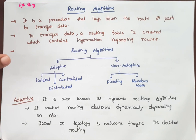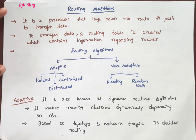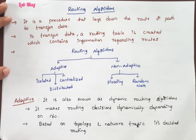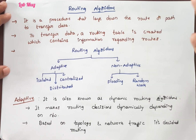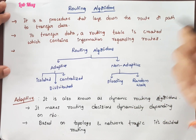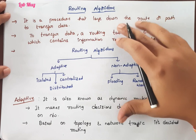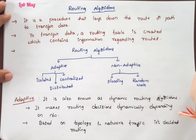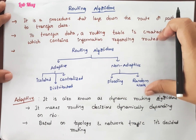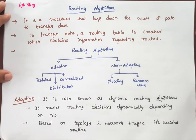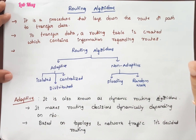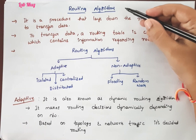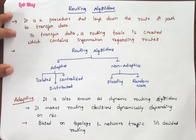Hi everyone. In the previous class we looked at routing — what is the concept of routing and types of routing. There are two types of routing: static routing and dynamic routing. To perform the routing operation, the router uses different algorithms based on situations — the static way and the dynamic way. Routing means transferring data from source to destination, and that is performed by the router.